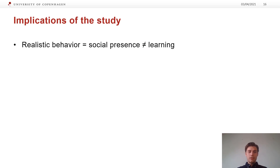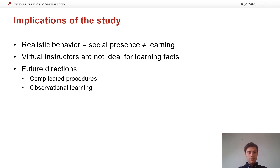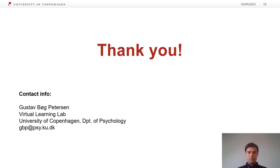As predicted by theory, these findings indicate that realistically behaving pedagogical agents do lead to more social presence. Contrary to theoretical claims, though, this doesn't lead to more learning. In general, we found that virtual instructors are not ideal for learning about numbers and figures, most likely because it requires a lot of mental resources and minimal distraction is therefore preferable. Next steps for research on this topic could be to use virtual instructors for other types of learning, such as learning complicated procedures rather than declarative knowledge. Learning by observing other people perform is a well-established phenomenon in educational psychology and could very well transfer to virtual people as well. Thank you.